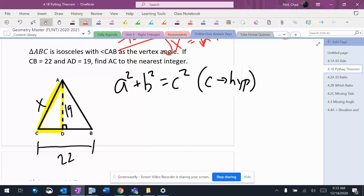Second thing, the altitude here coming down the middle of an isosceles triangle cuts the base in half, so that means that would be 11.